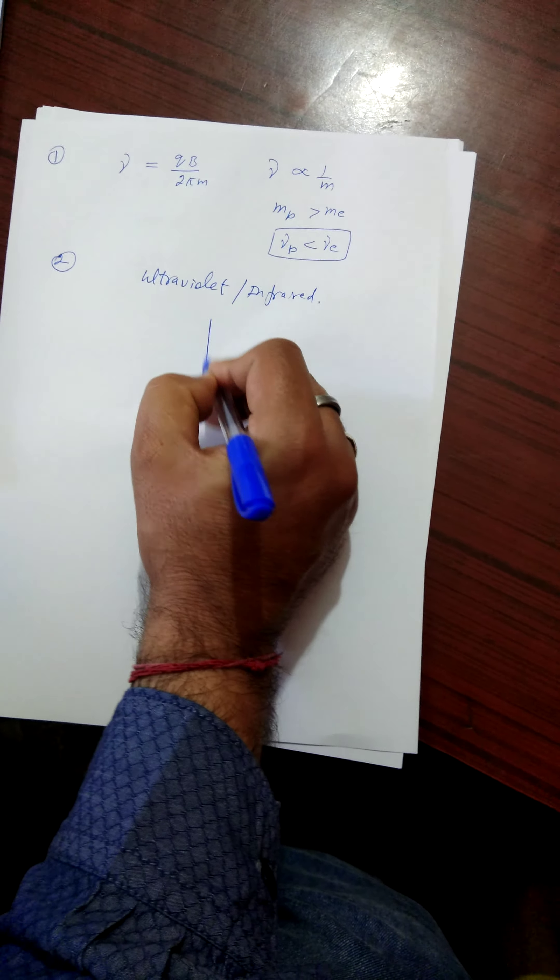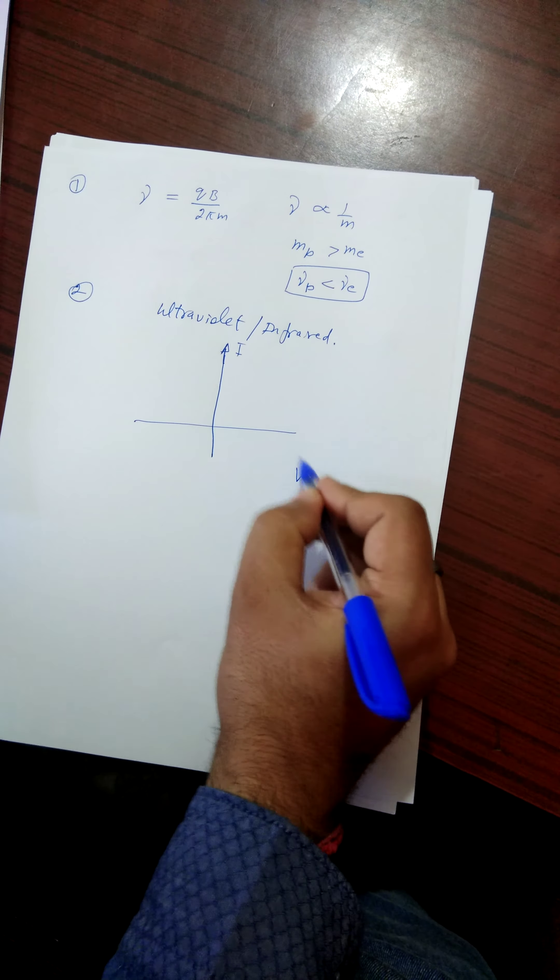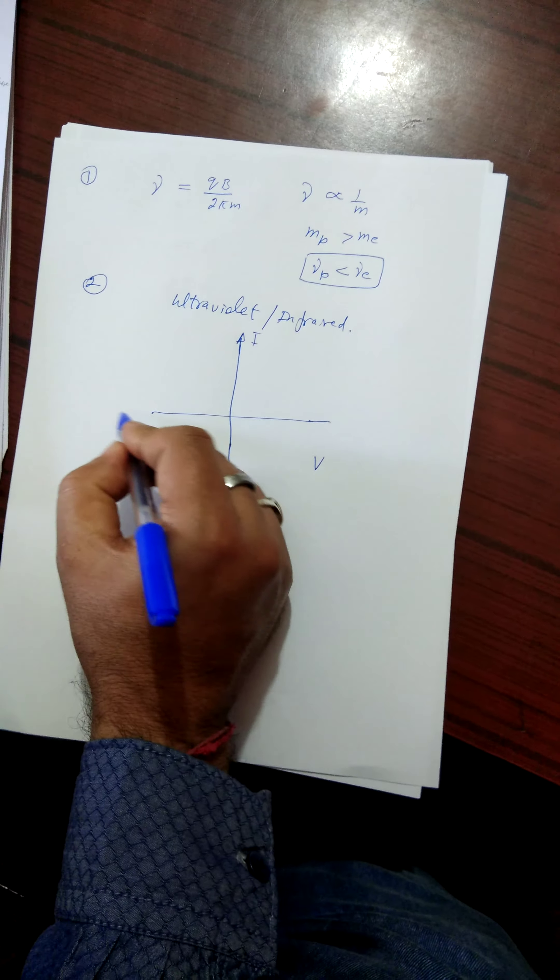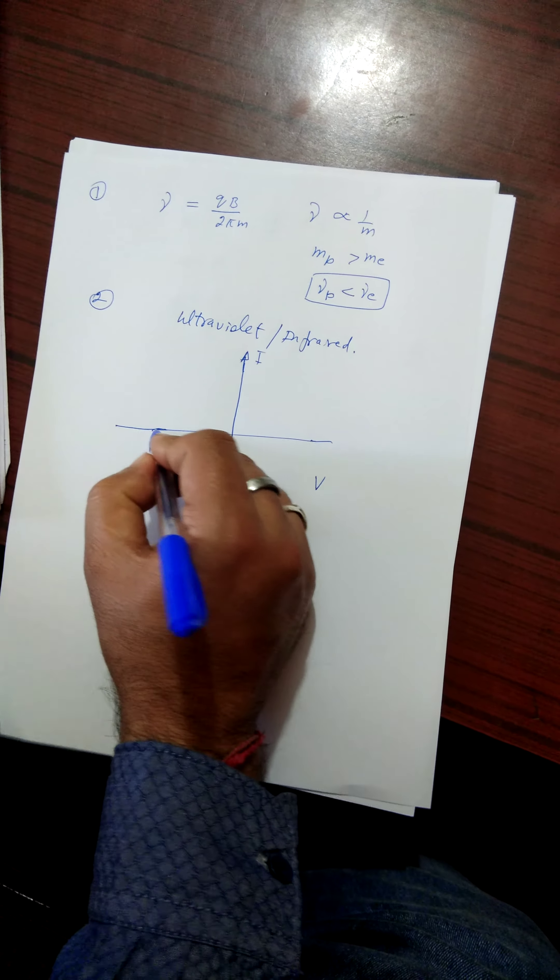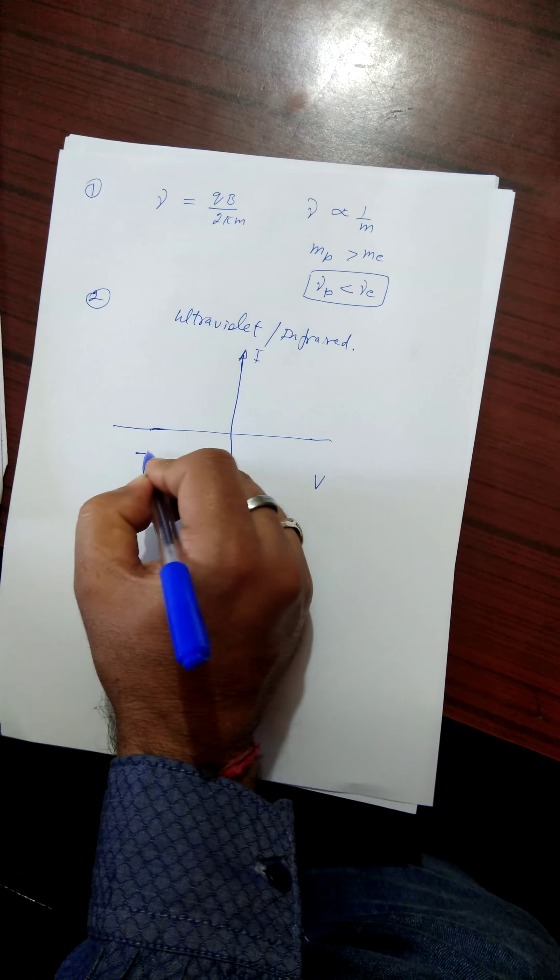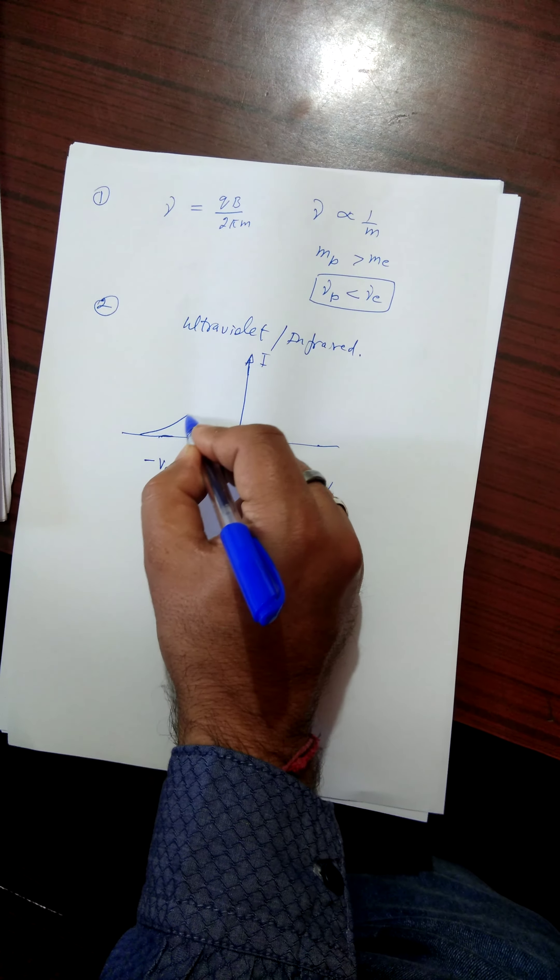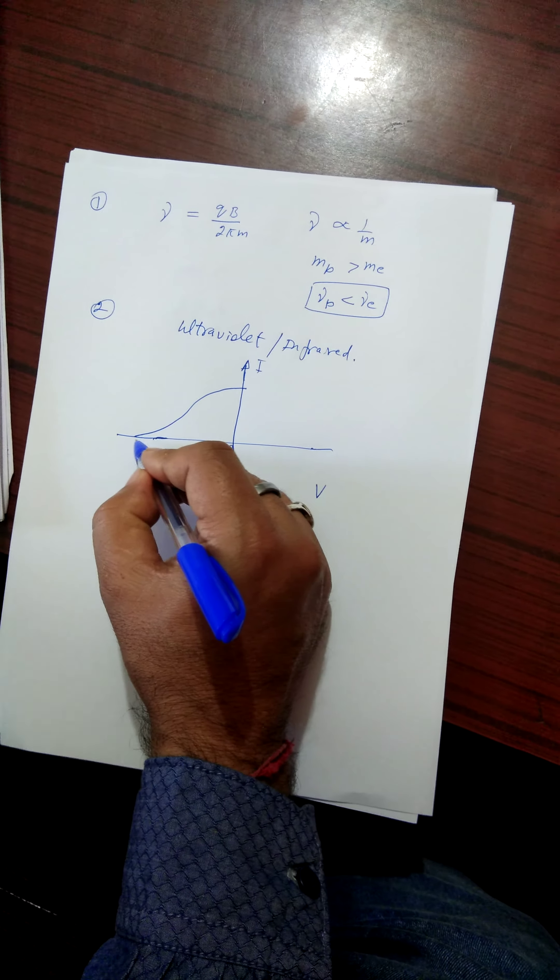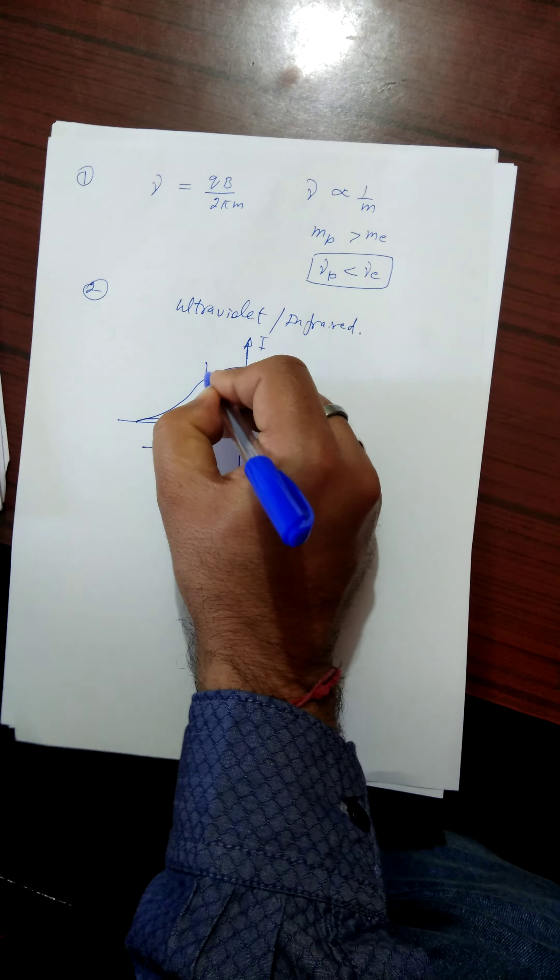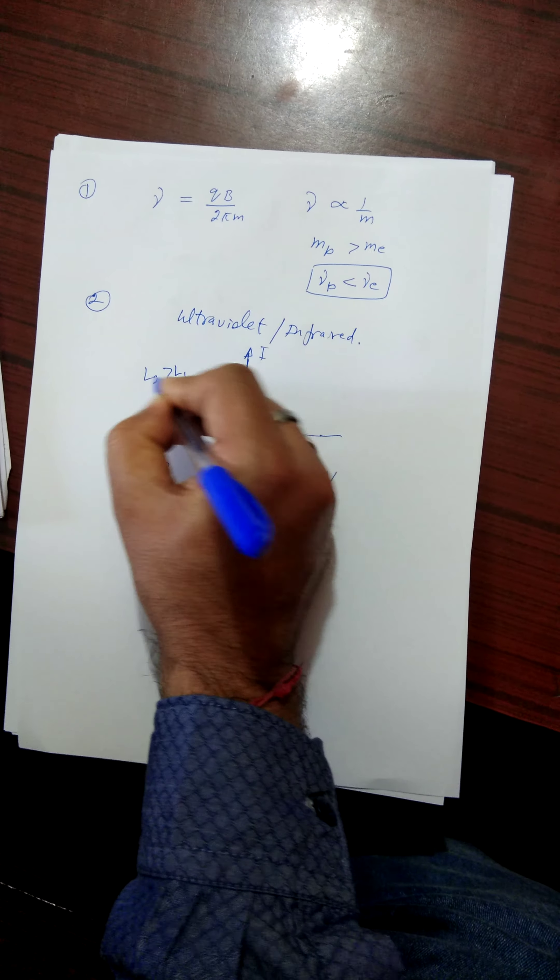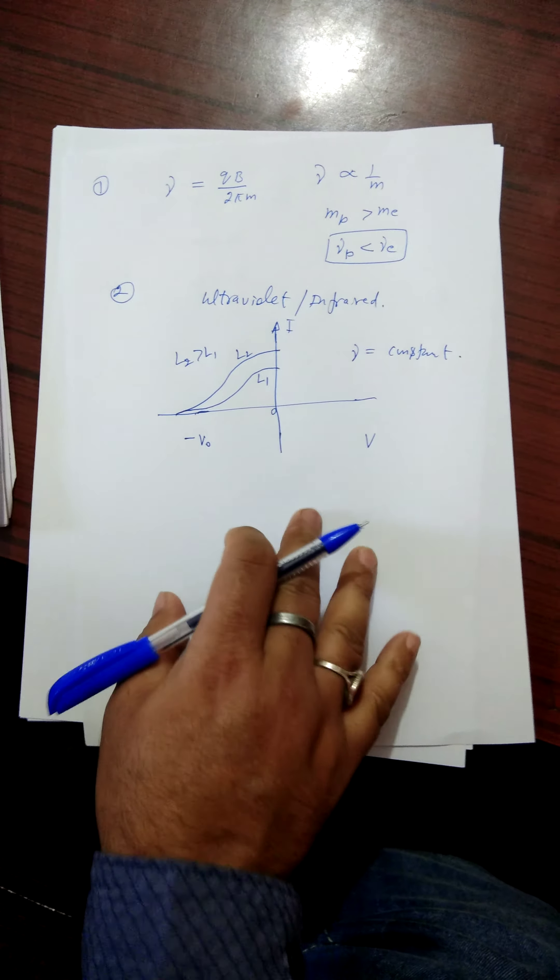We know that photoelectric current is taken along y-axis and this is applied potential. And the variation of current with applied voltage in this region negative potential is applied. So we know that current varies like this for the two intensities. This is intensity L1, L2. L2 is greater than L1 and frequency constant. So this is the answer of the third question.